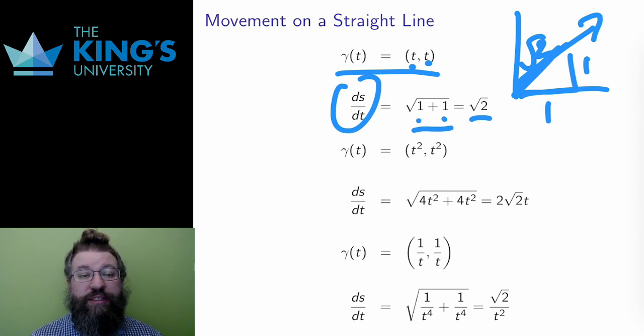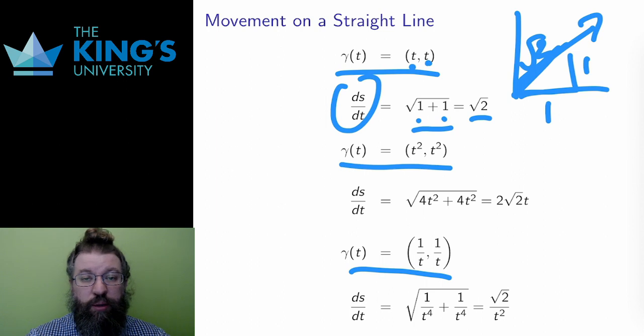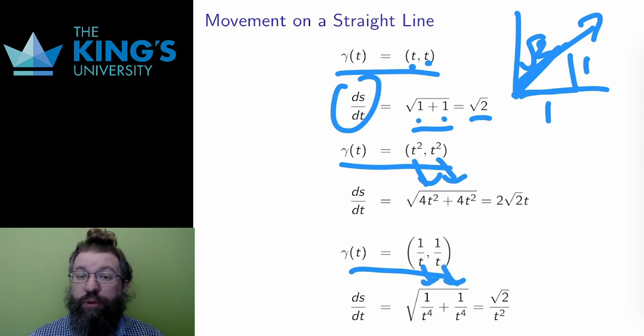I can reparameterize this straight line in many ways. I've put 2 on these slides. A parameterization in terms of (t squared, t squared), or one as (1 over t, 1 over t). In each case, I can calculate the time derivatives. 2t for both in the first case, and negative 1 over t squared for both in the second. Then I use Pythagoras on these derivatives to get the overall speed.